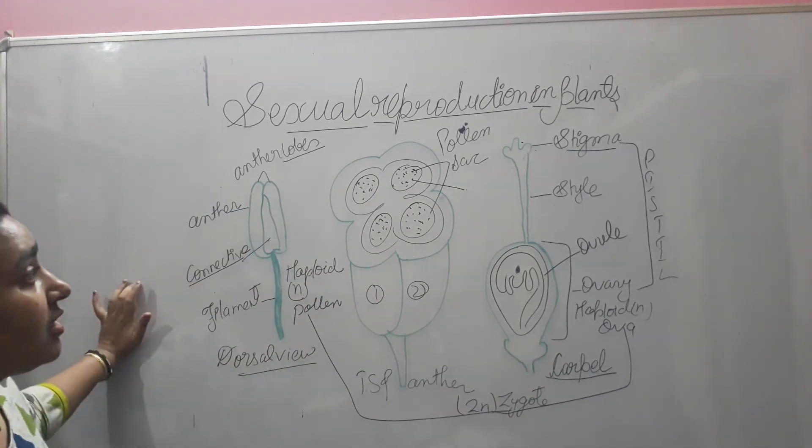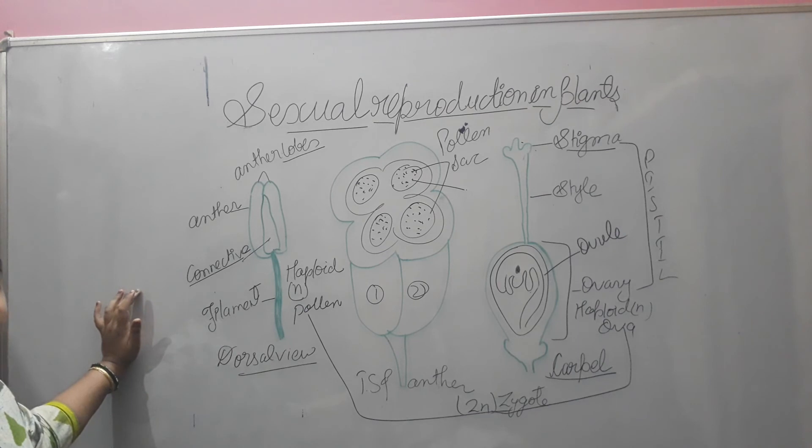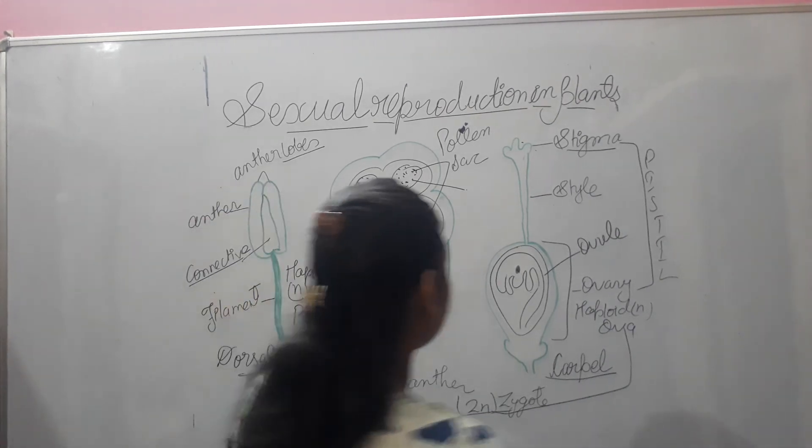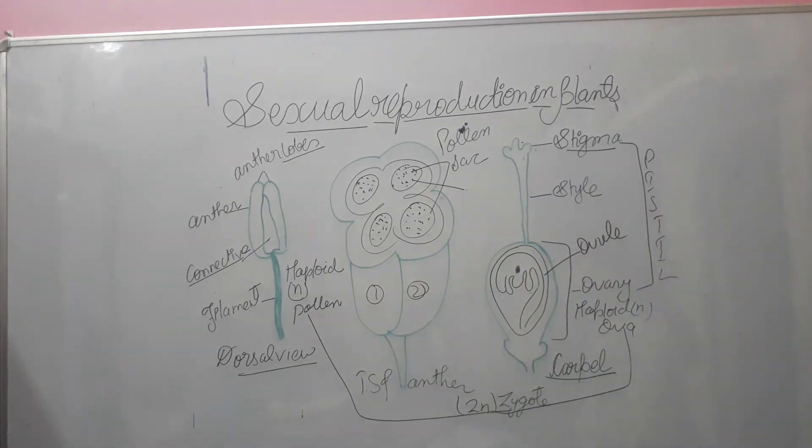So this is the structure of male and female reproductive parts of a flower. Further later on, we will see about the fertilization and how it happens in the flowering plant.